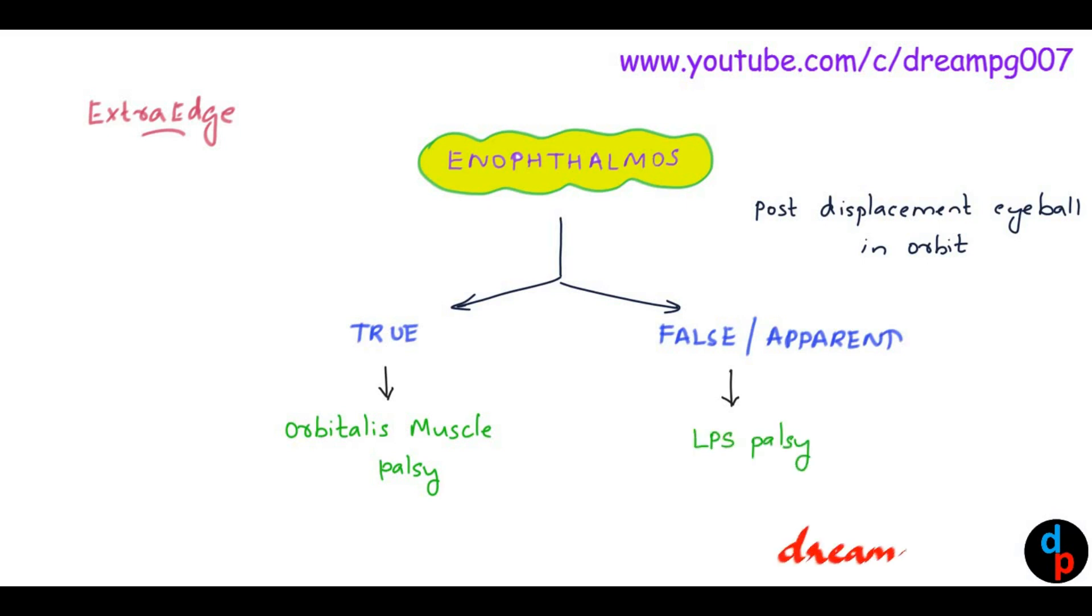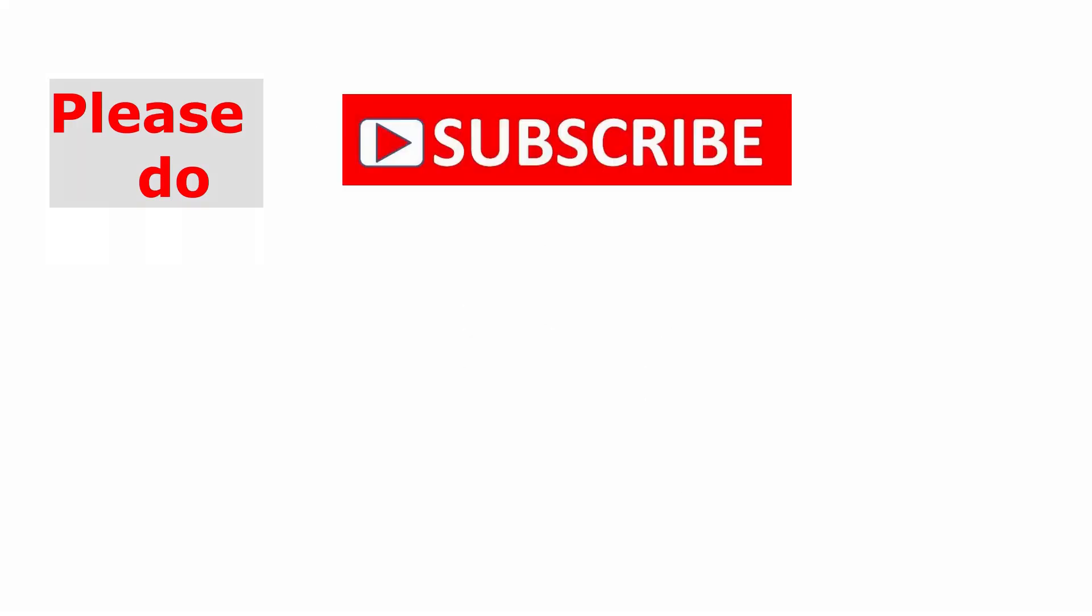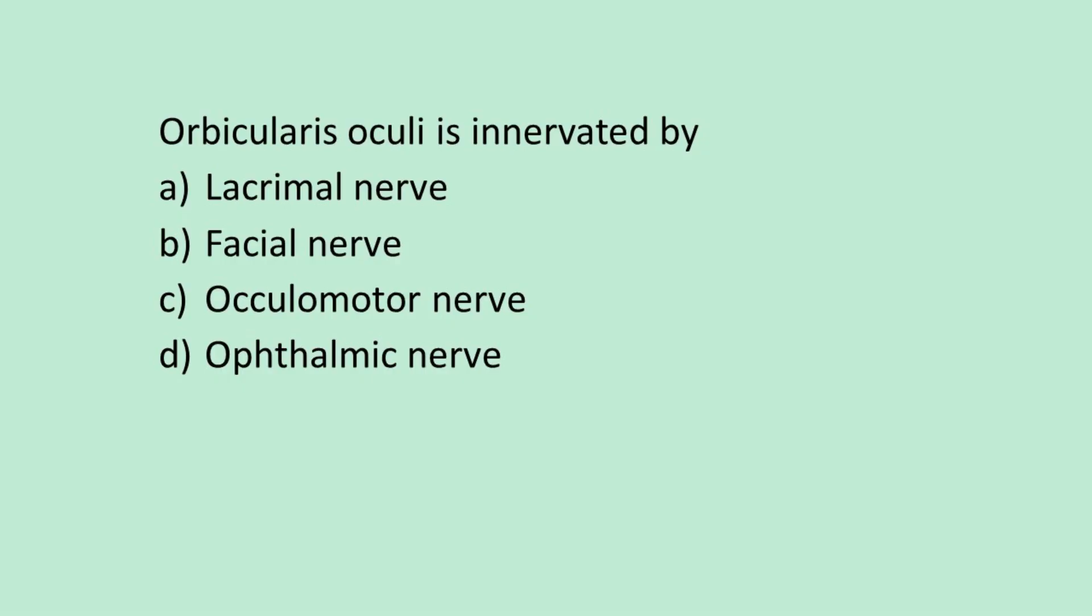Thank you very much. Please try to answer this question. Orbicularis oculi is innervated by: Option A, lacrimal nerve; Option B, facial nerve; Option C, oculomotor nerve; Option D, ophthalmic nerve.